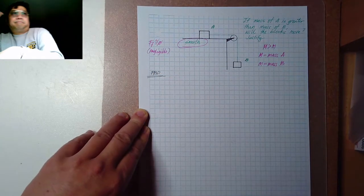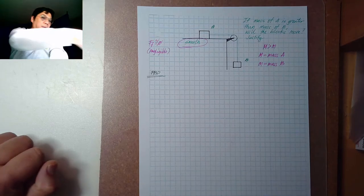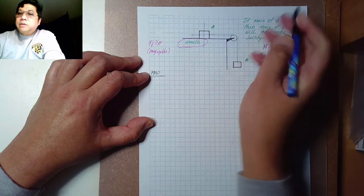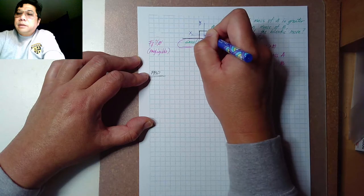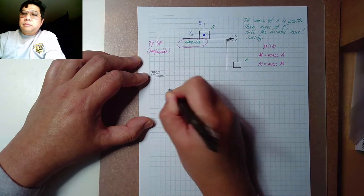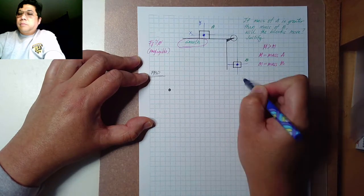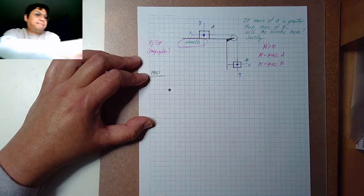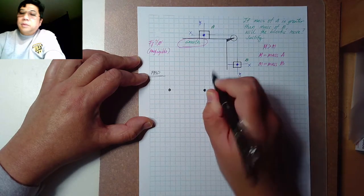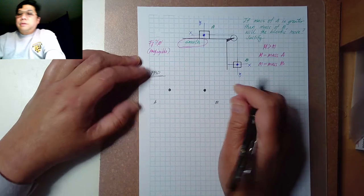There are two objects — two bodies in the system. For block A, I'll draw my x and y axes with the intersection at a dot. Same thing for block B: this is your y-axis and this is your x-axis, with my dot right here. So this is block A and this is block B.